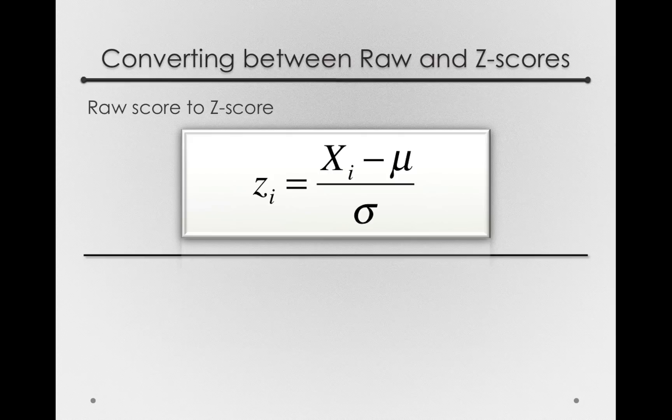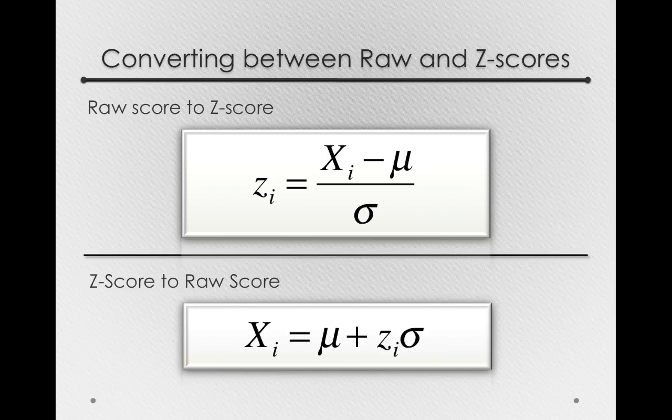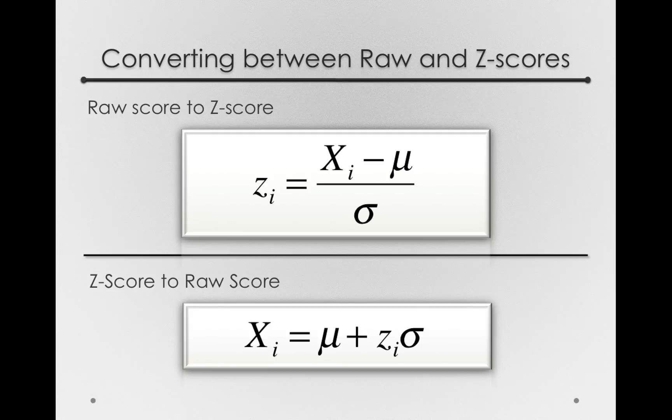It's important to note that a z-score transformation is non-destructive. That is, if I give you a z-score and I also tell you the mean and standard deviation of the distribution, you can simply go back and find the raw score.